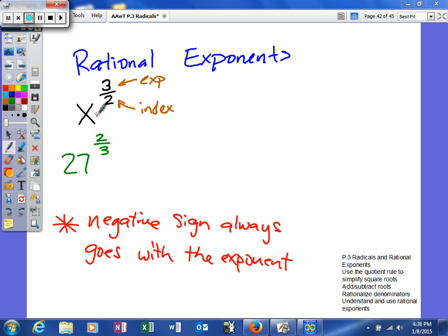And here's an example, so x to the 3 halves power. Anytime you see a fractional exponent, it actually has two parts. The numerator is going to be the exponent, and the denominator is going to be the index. So the way we can express this not as a rational exponent is actually say it's the square root of x cubed. Or, that's basically we're cubing it first and then taking the square root. Or we can say it's the square root of x to the 3rd power.